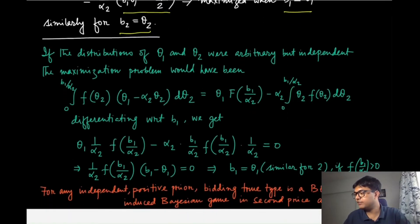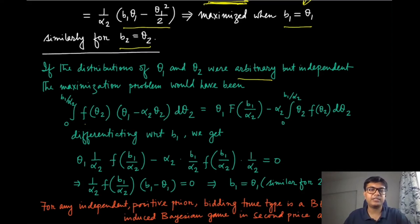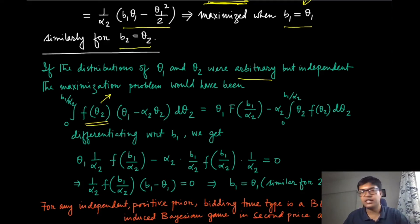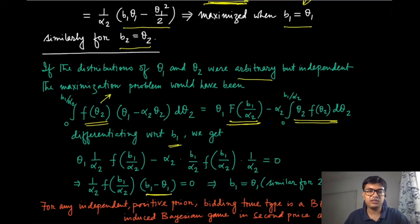We can extend this result: if the distributions of theta1 and theta2 are arbitrary but independent, the maximization problem changes slightly. Instead of using the uniform density of 1, we use an arbitrary density f. When computing the integration, we obtain the corresponding CDF. Taking the first order condition with respect to b1 gives an expression where (b1 - theta1) multiplied by certain terms equals zero.